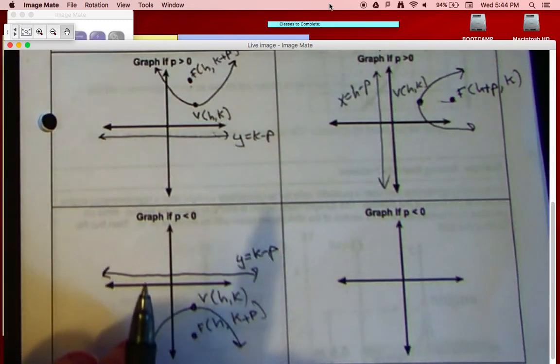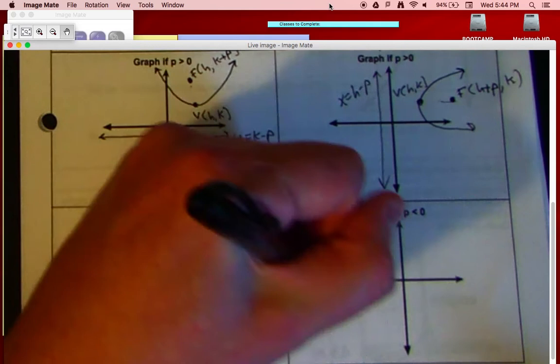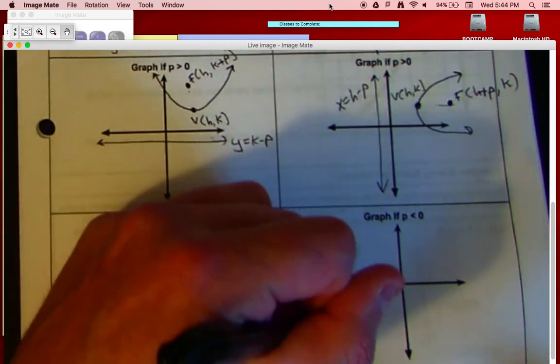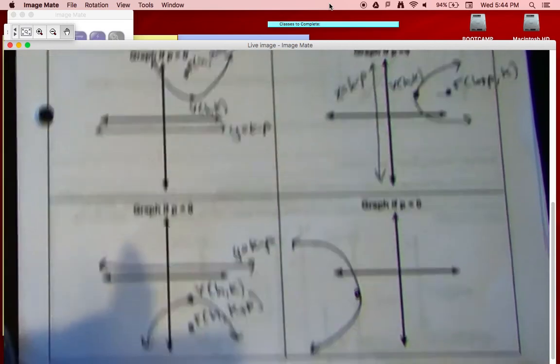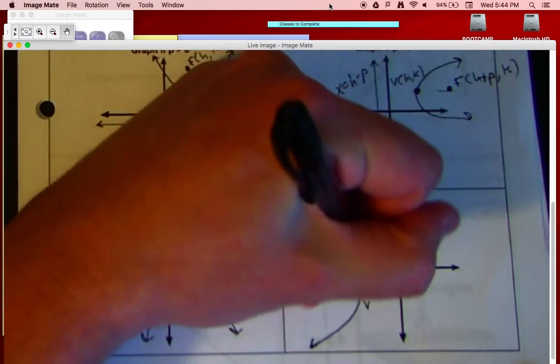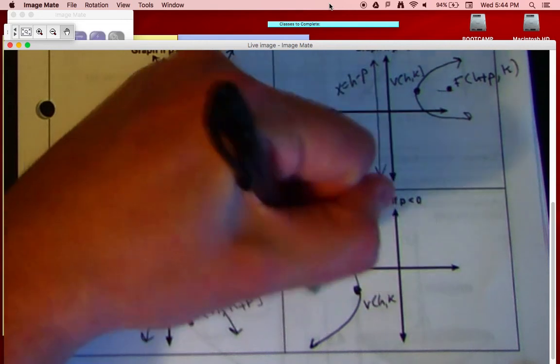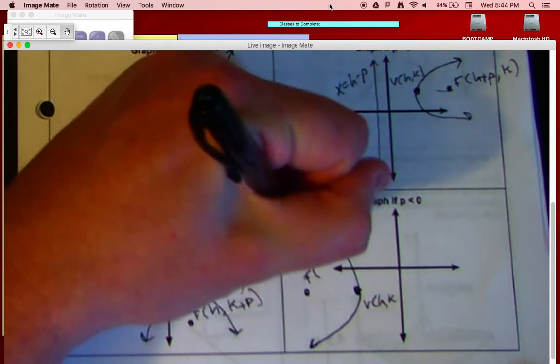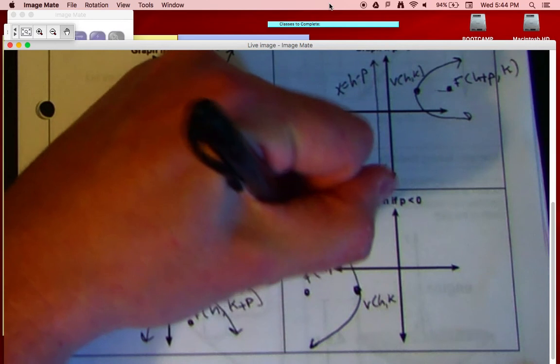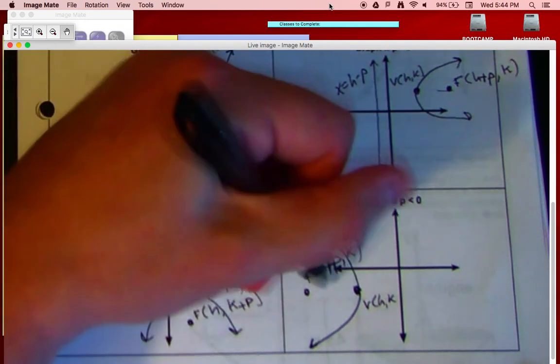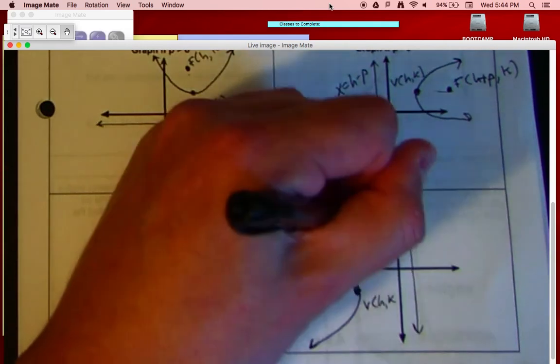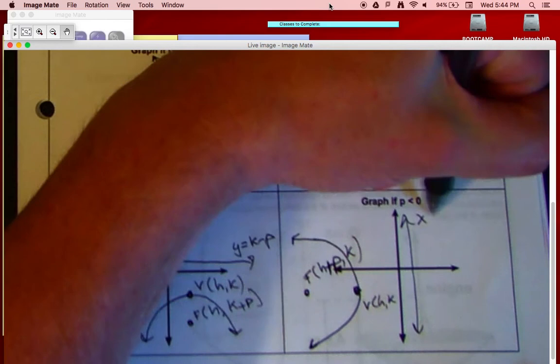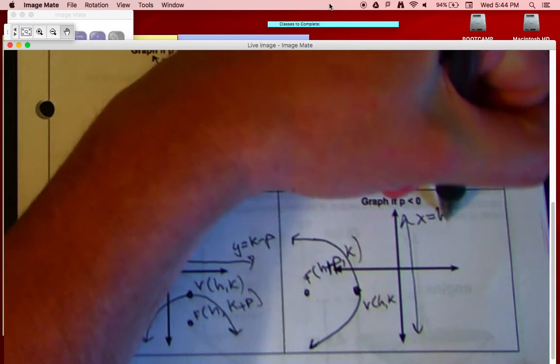The other key thing to remember, if p is less than zero, what do we got? Alright, this one will open to the left, like so. So once again, our vertex is h comma k. Our focus goes on the inside. How do we find that? h plus p comma k. Once again, we can just count.